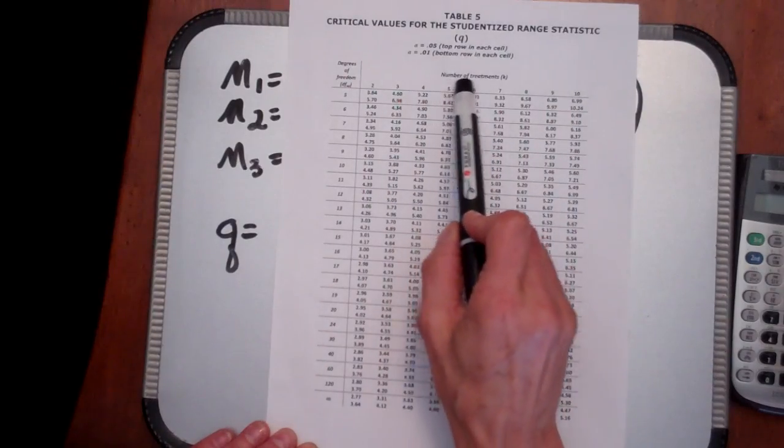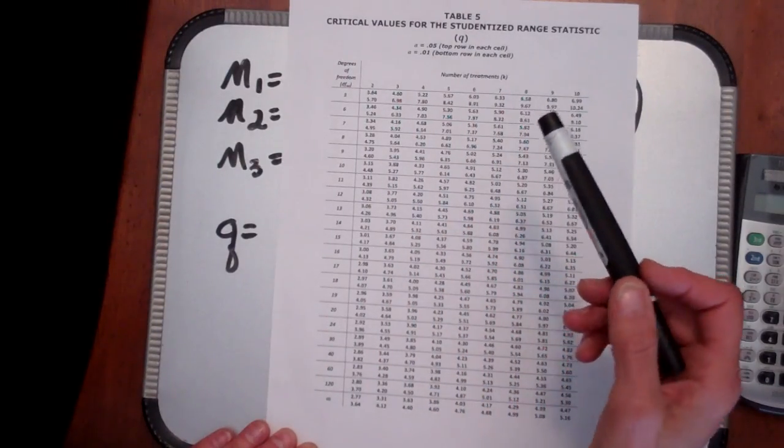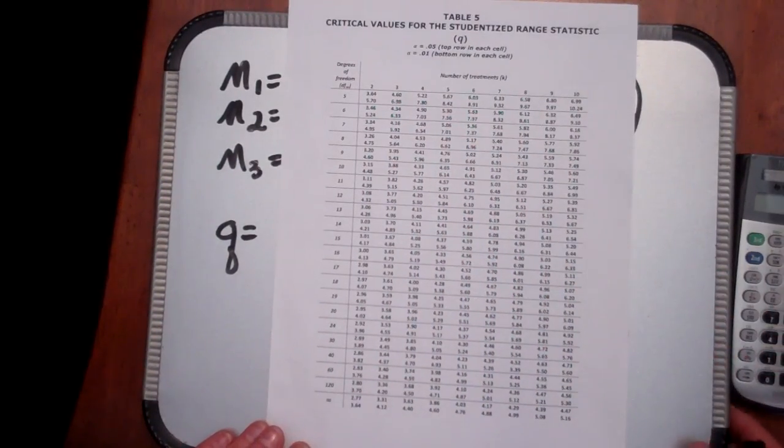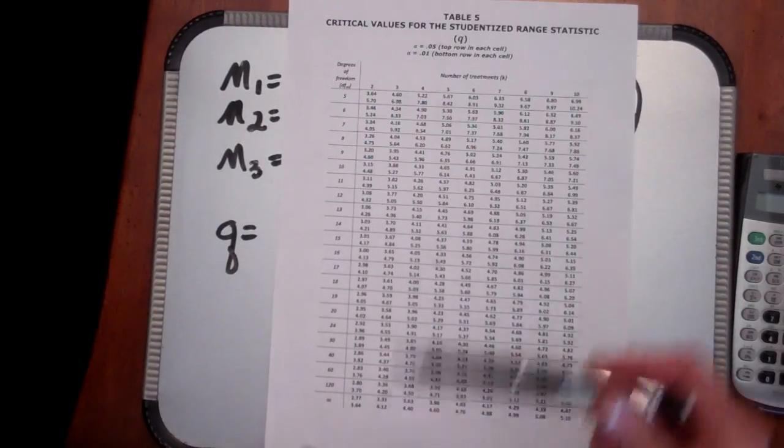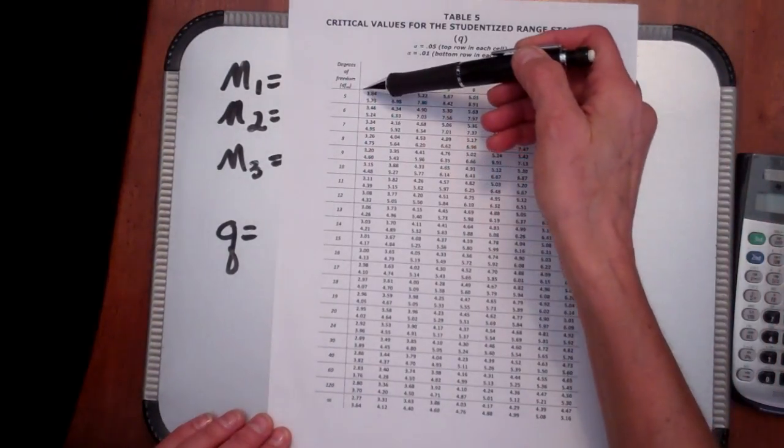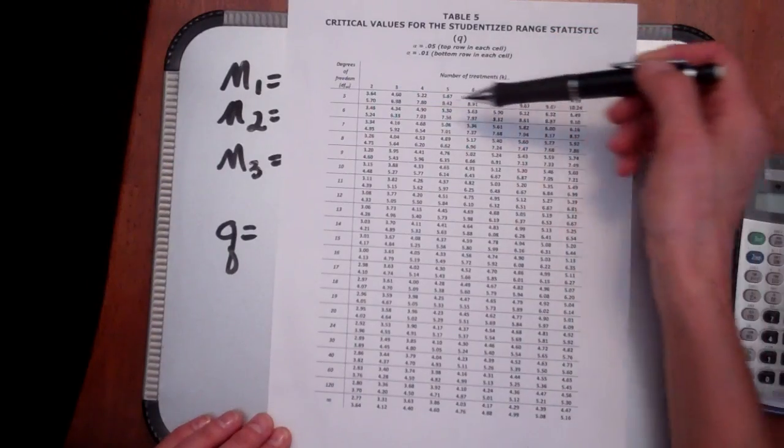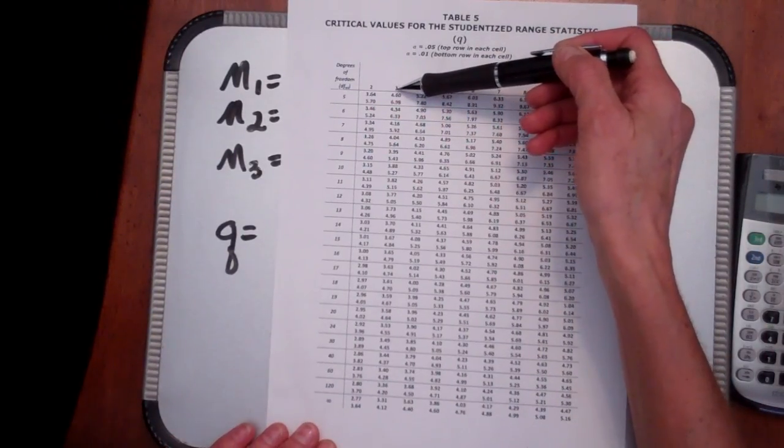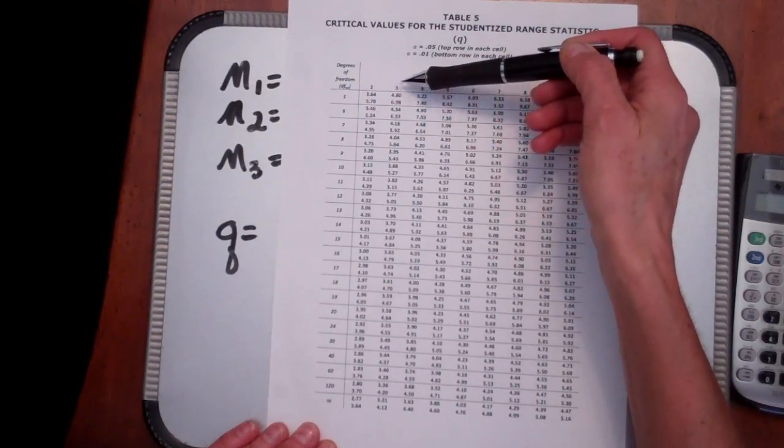And across the top are the number of treatment groups in your ANOVA. Now in our example we had three treatment groups, so we go over. Here's 2, 3, 4, 5. We go to the column of numbers under the number 3 here.